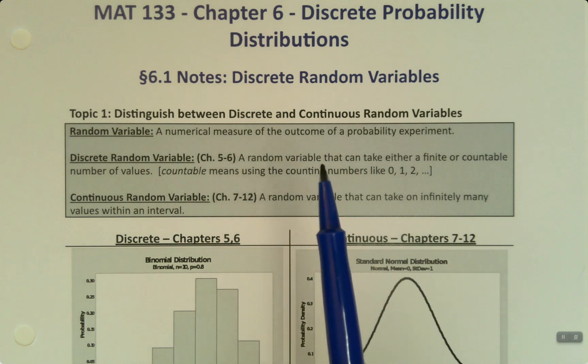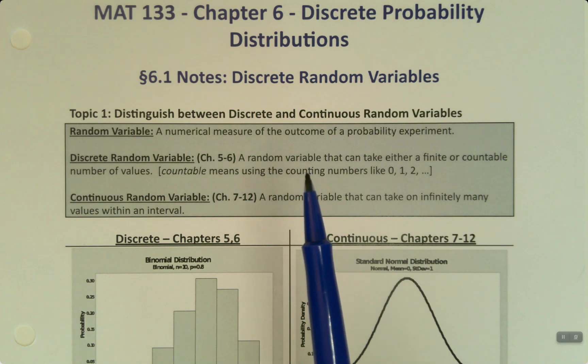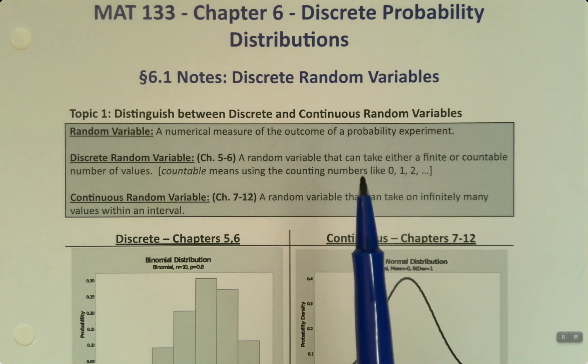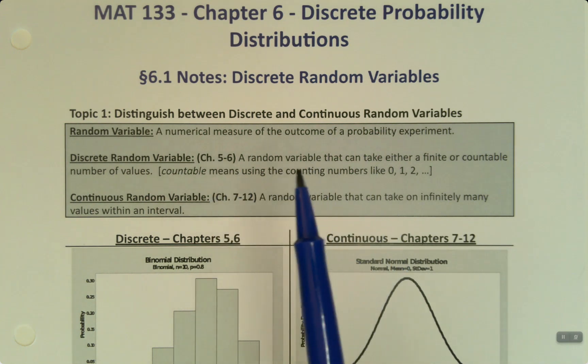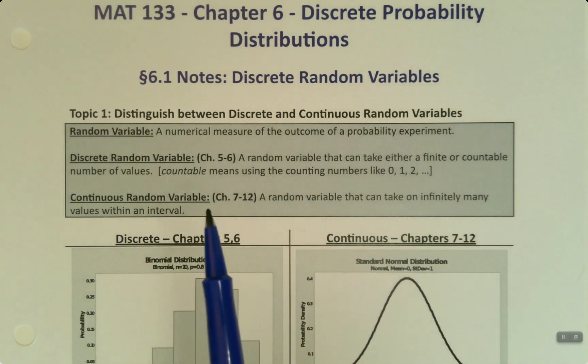There are some exceptions to that, such as shoe size and your grade in a class. But besides from those couple examples, it tends not to have decimal places. Continuous, on the other hand, can take on infinitely many values in an interval. In other words, it's measured and generally has decimal places.